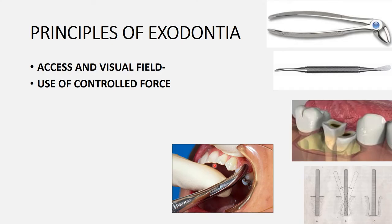The two main instruments used for tooth extraction are forceps and elevators. Elevators are used for widening the bony socket so the tooth loosens, and then forceps are inserted to remove the tooth. When removing the tooth, forces must be kept under control so as not to cause damage to the investing tissue.